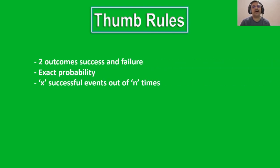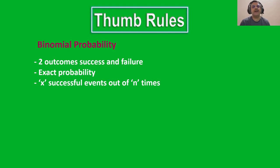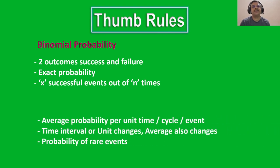Here are a few thumb rules to remember. If you are given an exact probability like the one we saw with IT problem tickets, and you want to find the probability of a discrete successful event happening a certain X number of times out of N times — like the high severity tickets out of 10 tickets — use the binomial distribution. In case you are dealing with an average probability of an event happening per unit time, per unit cycle, or per event, and you want to find the probability of a certain X number of events happening in a period of time, like certain number of customers being serviced in three minutes, use the Poisson distribution.